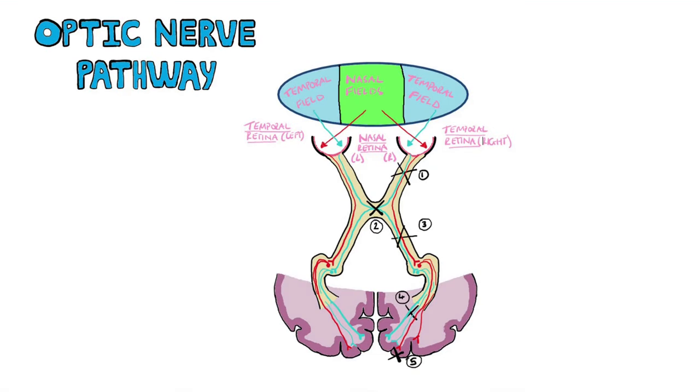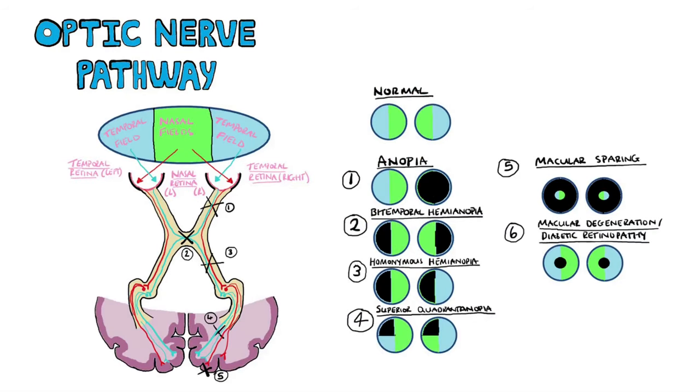But what happens when there are lesions in different parts of the pathway? Well, different visual anomalies can be seen based on where the lesion is.